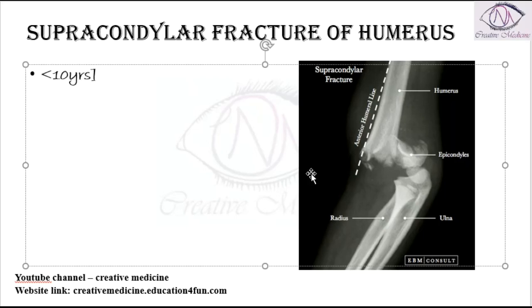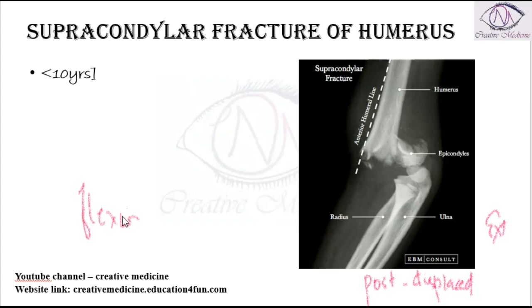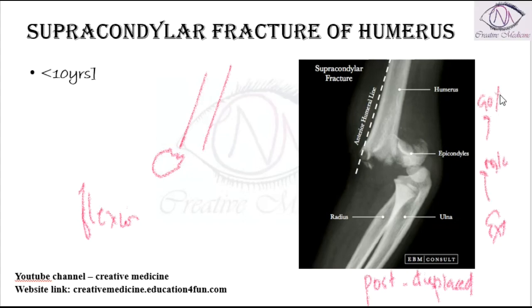Supracondylar fracture is of two types. First, we have extension type of injury. Second, we have flexion type of injury. Whenever there is extension type of injury, the distal fragment is posteriorly displaced. In flexion type of injury, the distal fragment is anteriorly displaced. Extension type of injury is the most common, involving around 90% of patients.